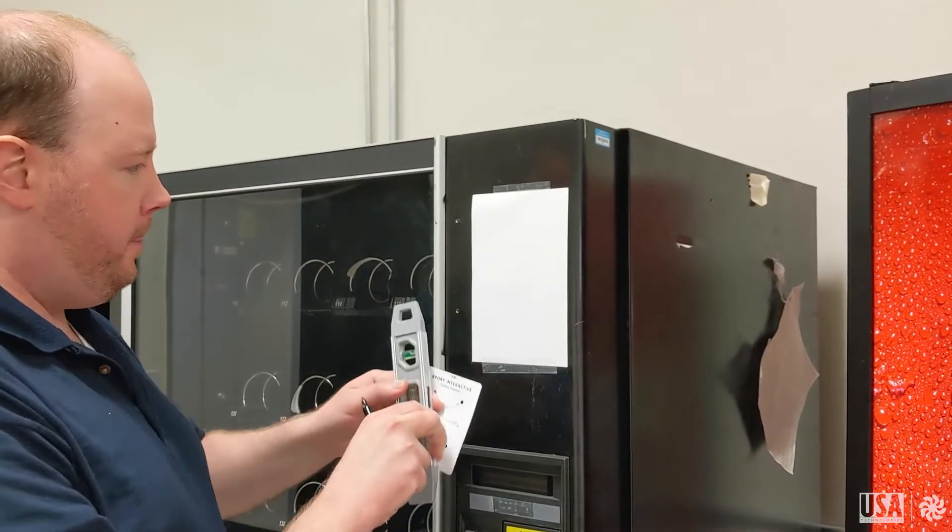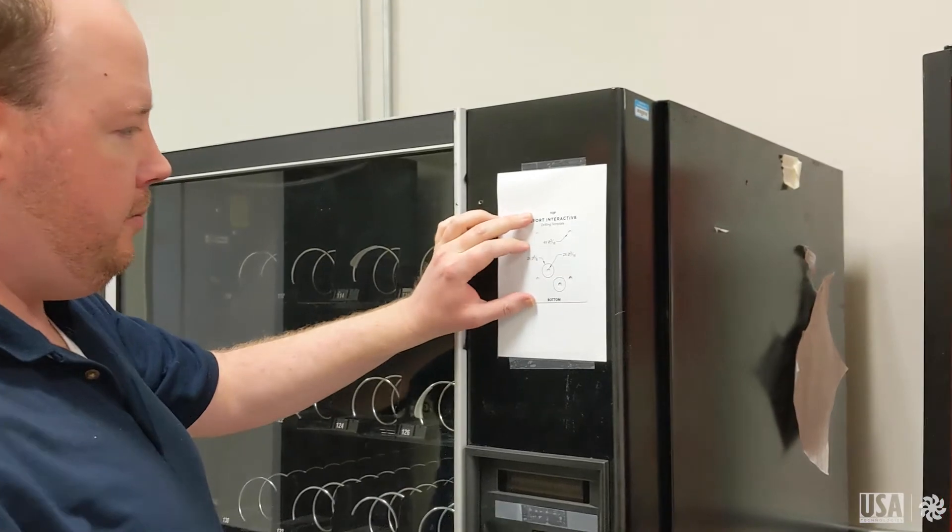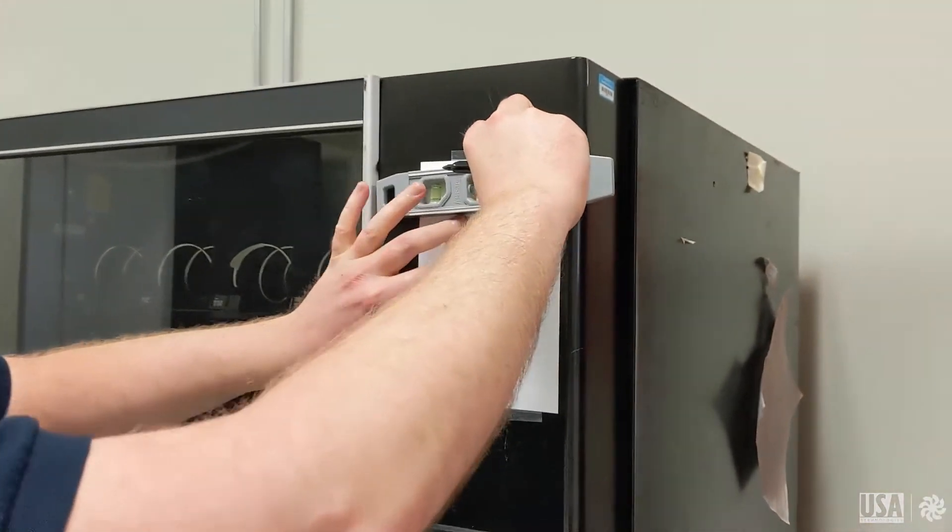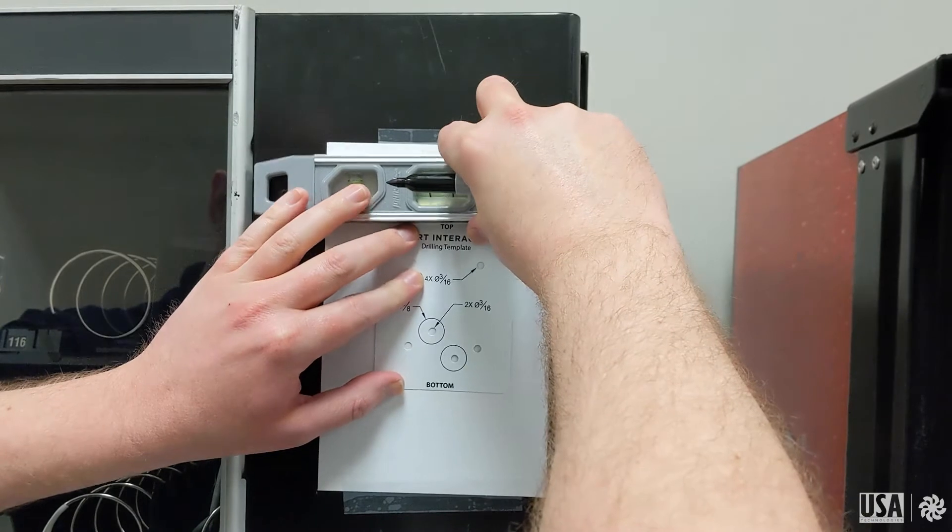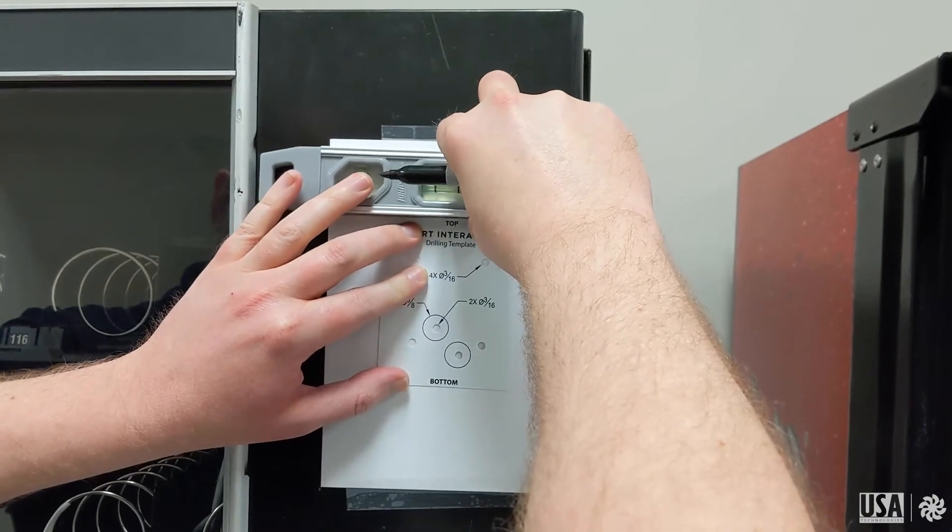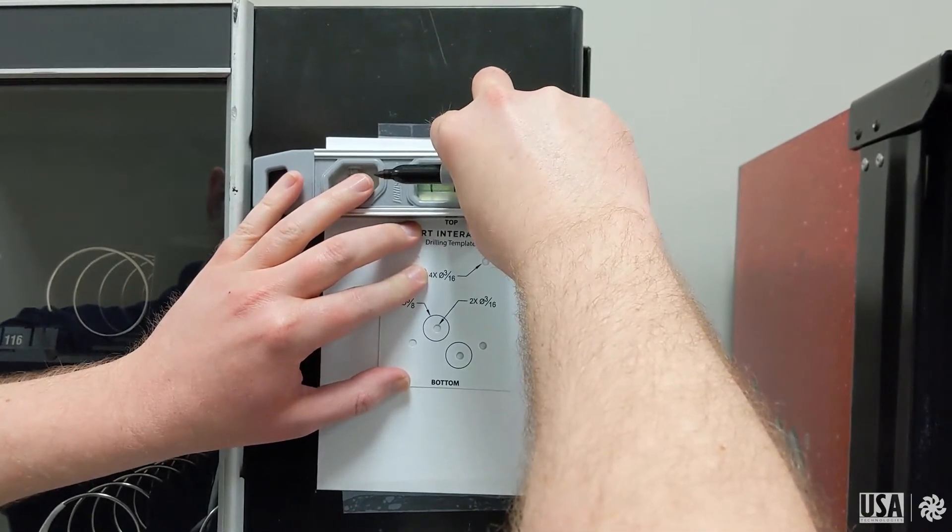To begin, you may wish to tape a piece of paper to the front of the machine so that it is easier to spot where the marks are for drilling. Next, take the template and the level to find the right space for your interactive to be installed and level out the template.